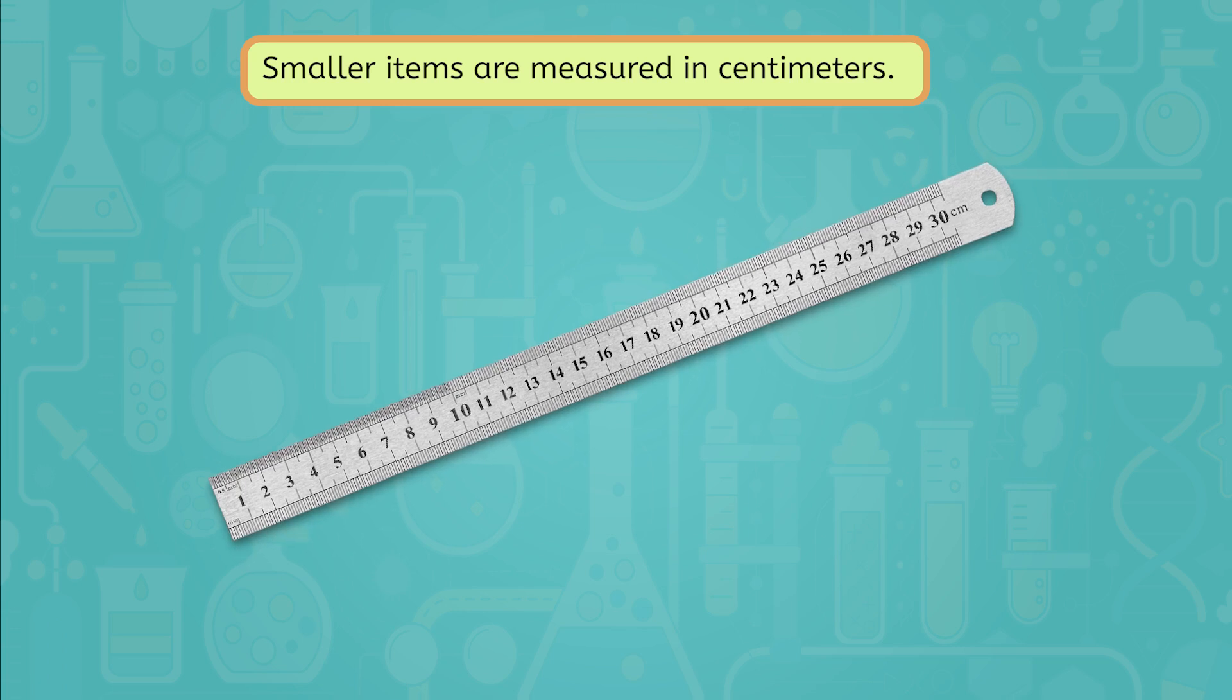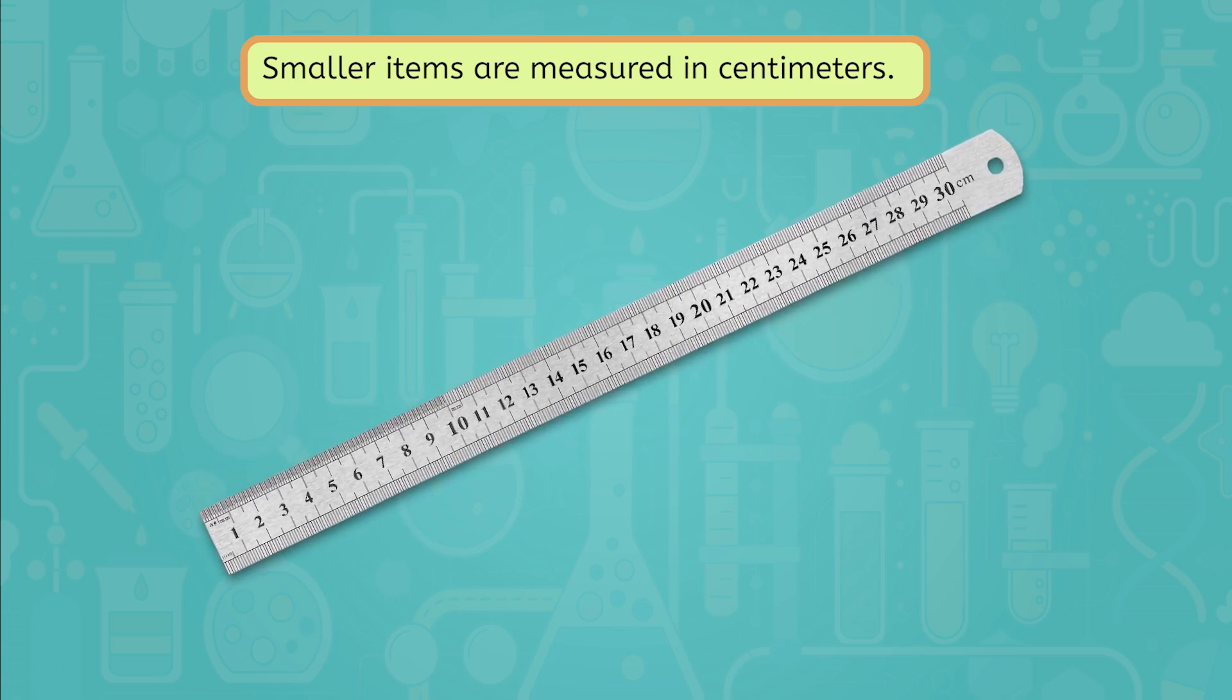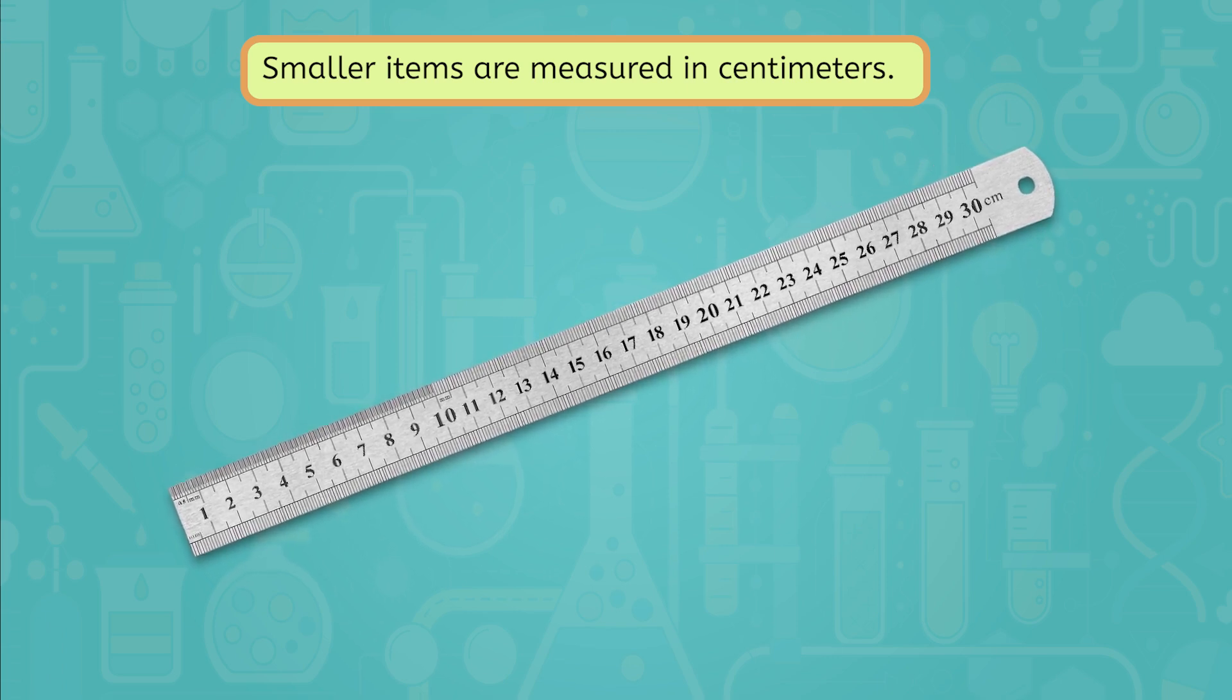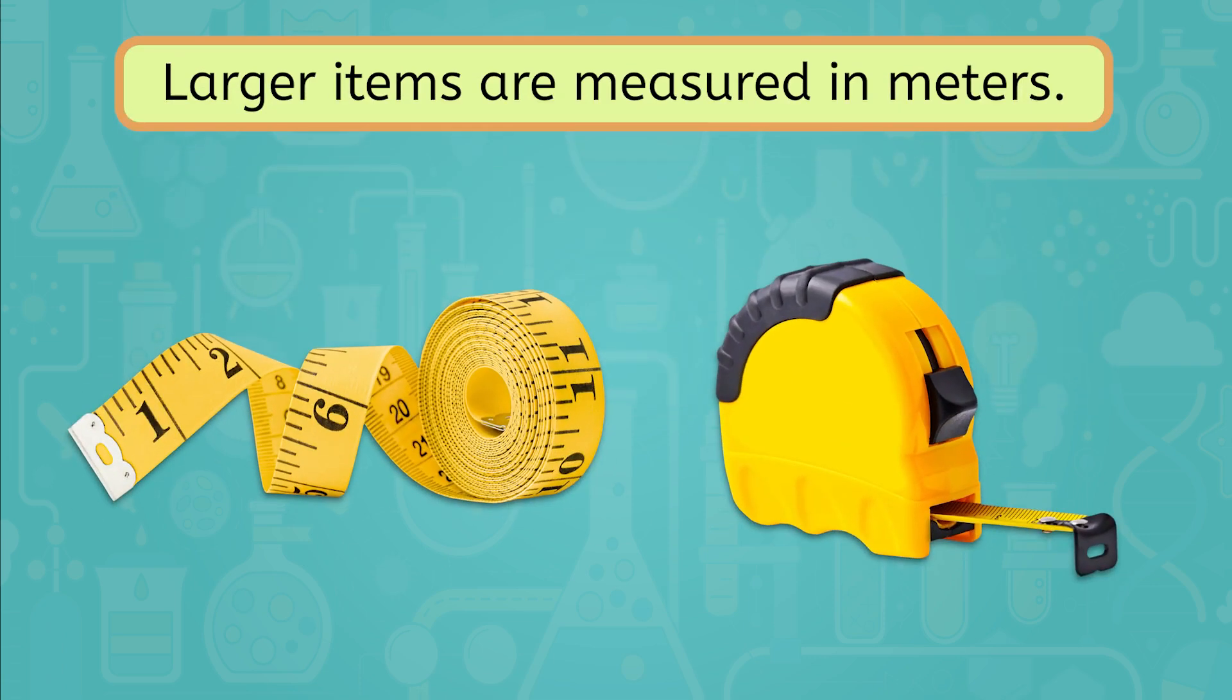Smaller items are measured in centimeters. If you're using a ruler or a small tape measure that shows centimeters, you'll want to measure smaller items, like a pencil, a notebook, or the width of your desk. Larger items are measured in meters. If you have a longer tape measure that also shows meters, you can measure bigger items, like the length of a table, the height of a door, or even the distance across a room. Trying to measure a whole room with a ruler in centimeters would take forever, and using a meter-long tape to measure a pencil might not be very accurate.